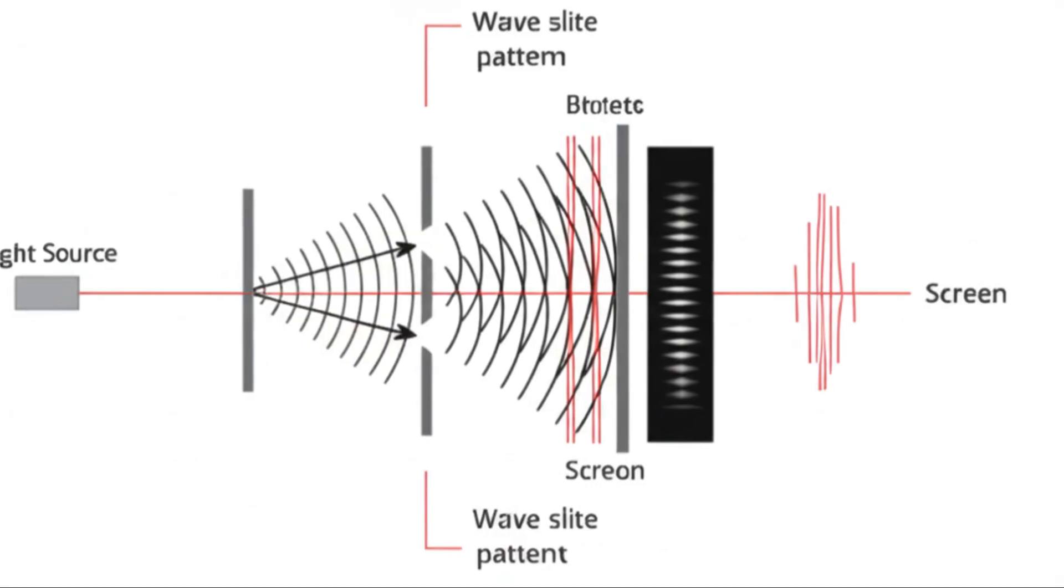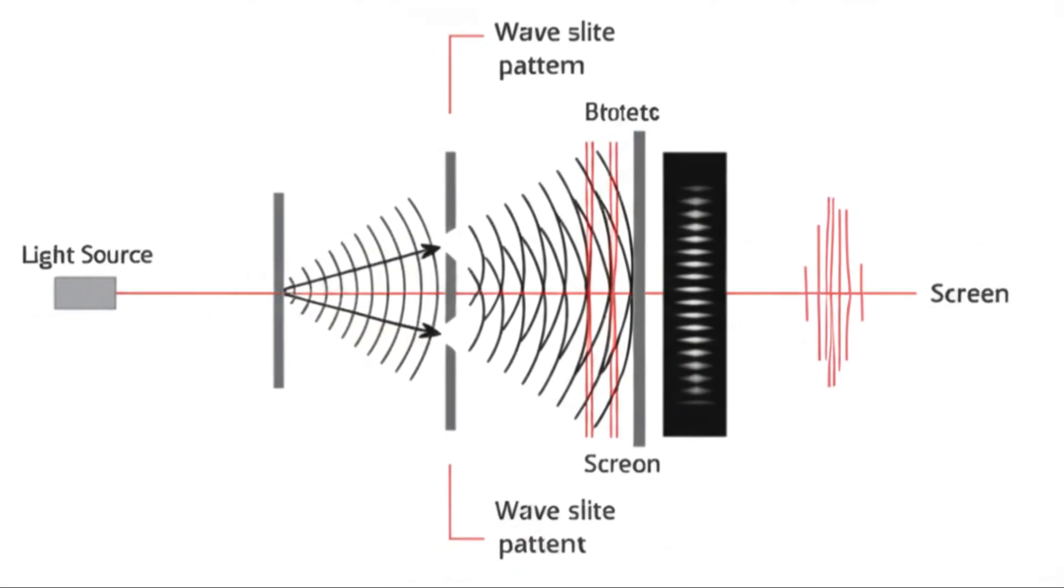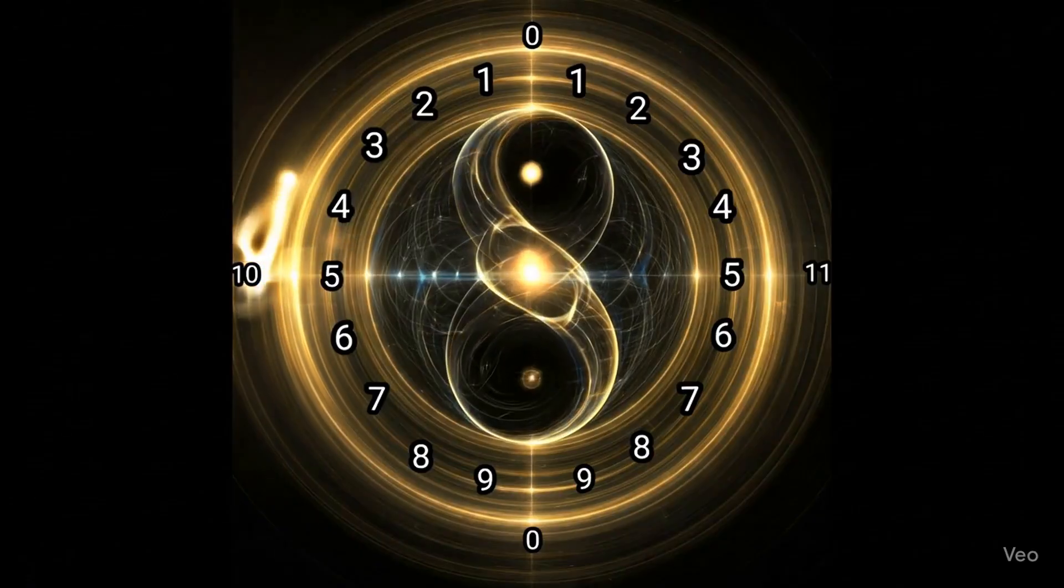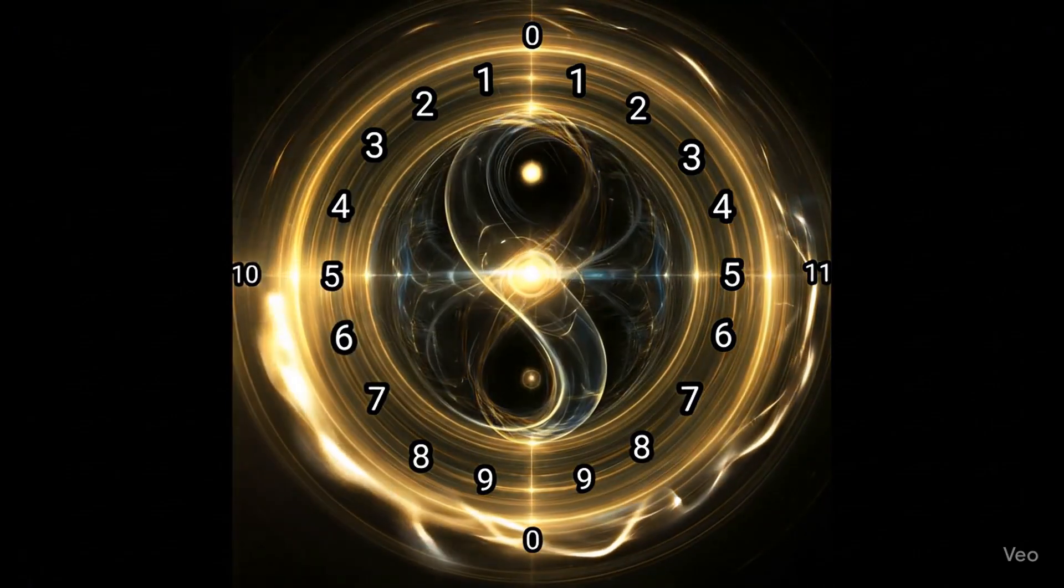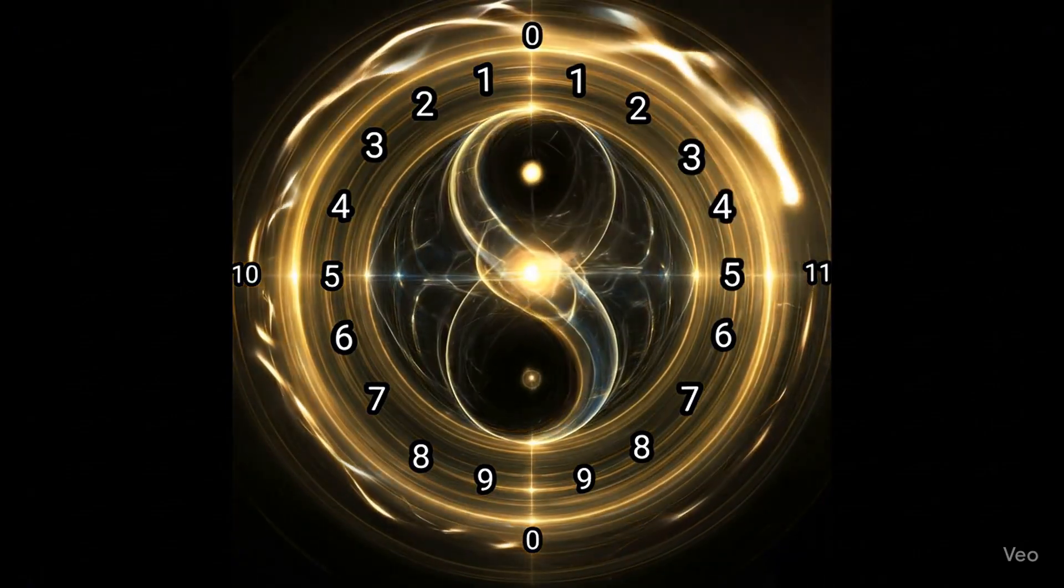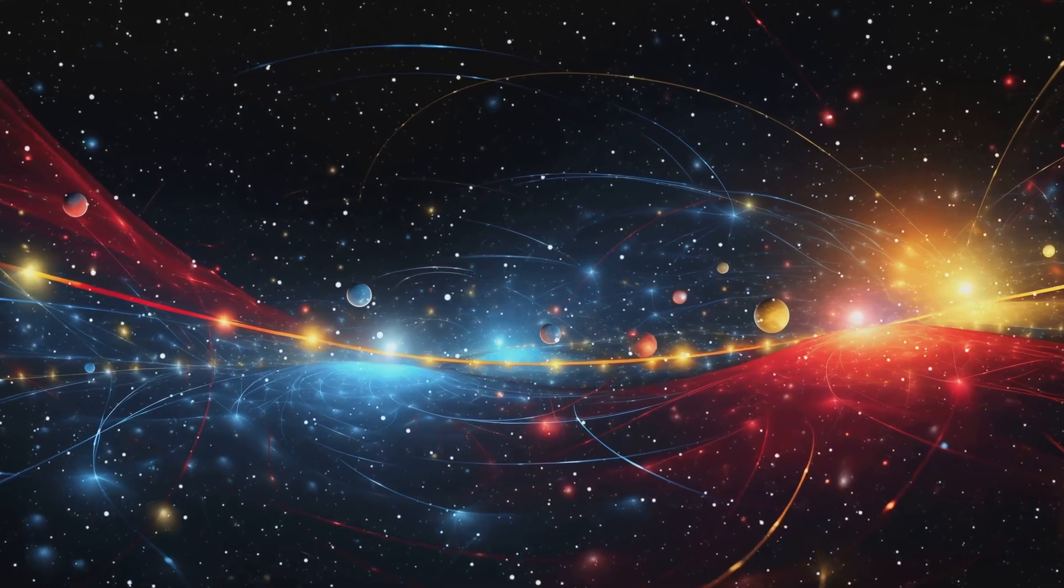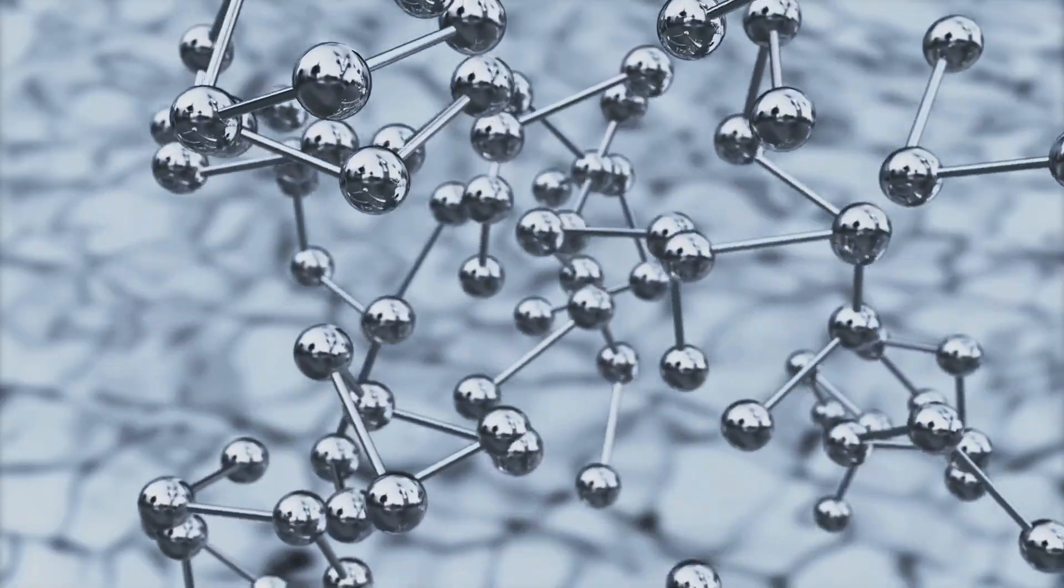Now if we place a detector, a light sensor for example, at one of the slits to figure out where each electron actually goes, something extraordinary happens. The interference pattern vanishes. Instead, we see two distinct lines on the screen, just as if each electron chose one slit, behaving like a tiny solid particle.